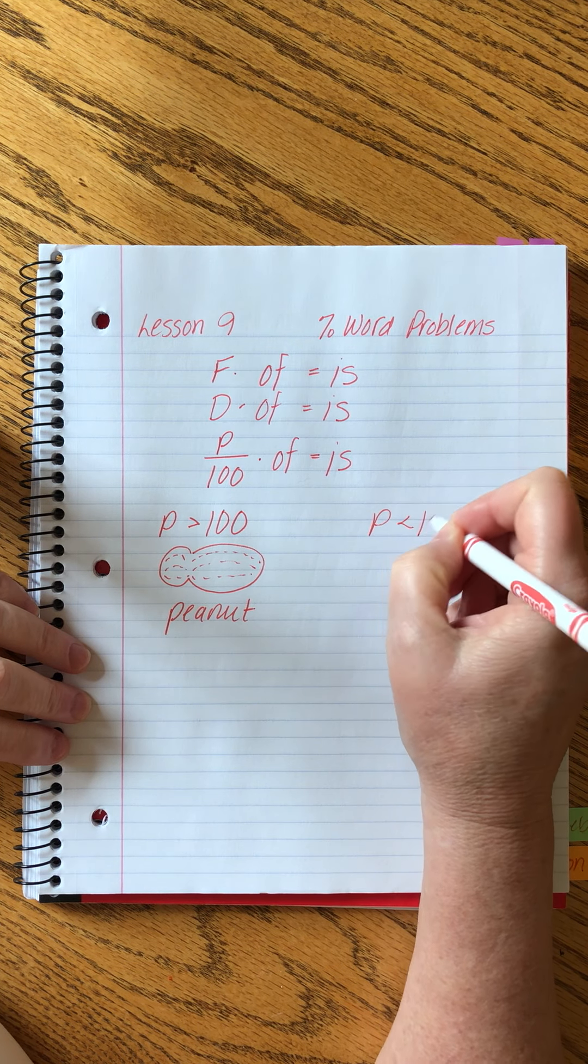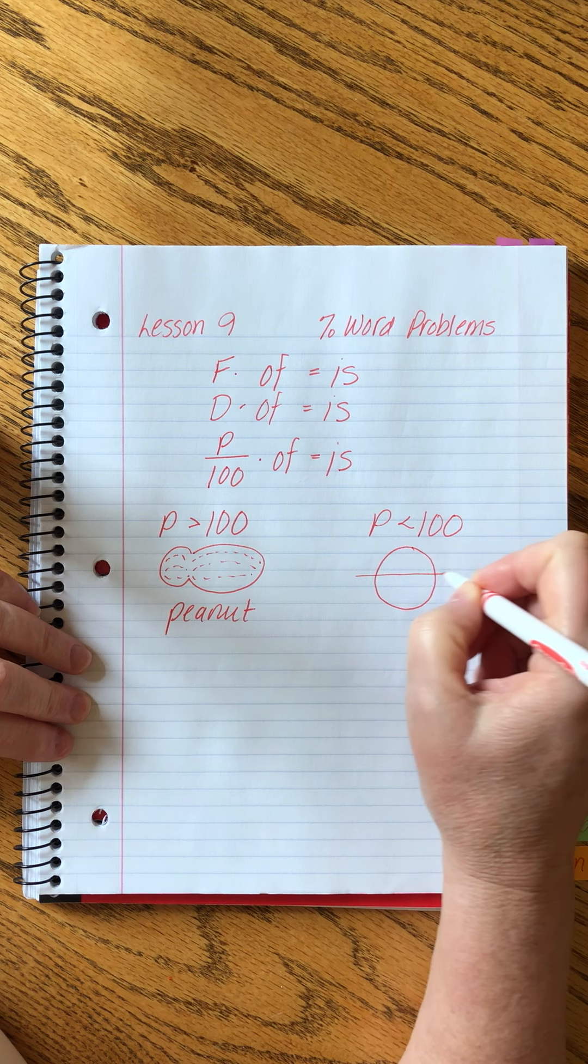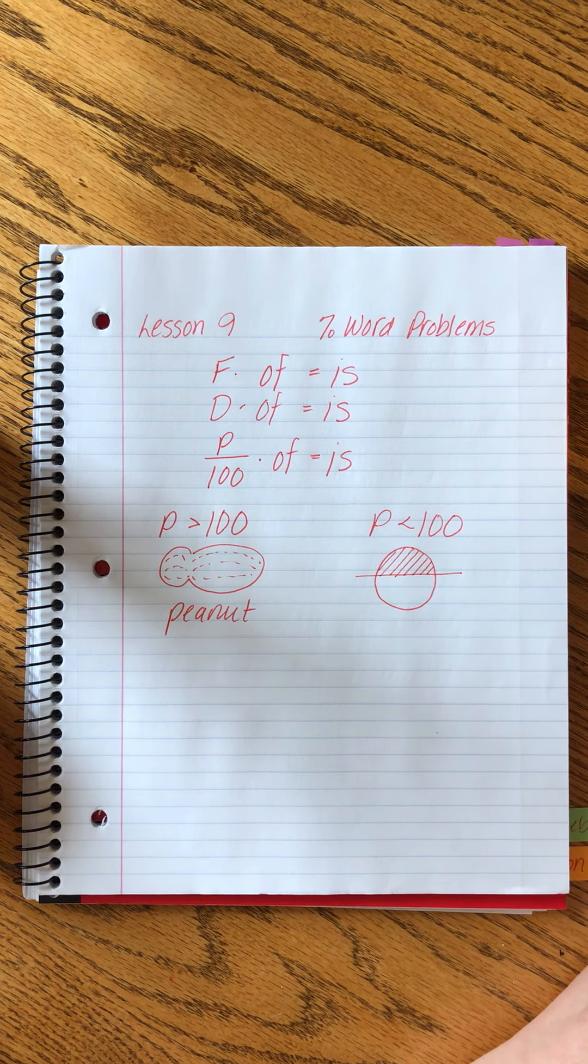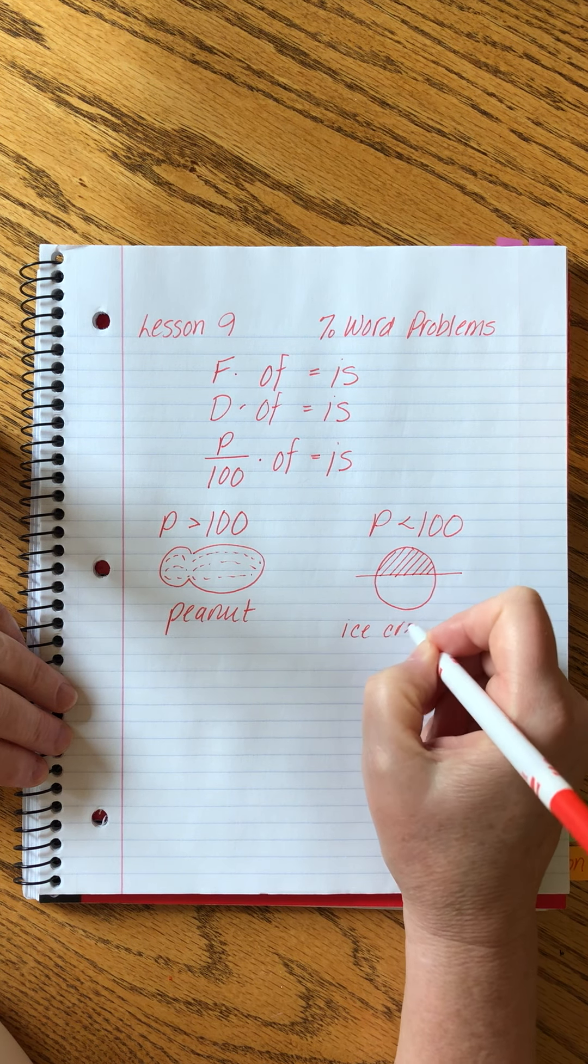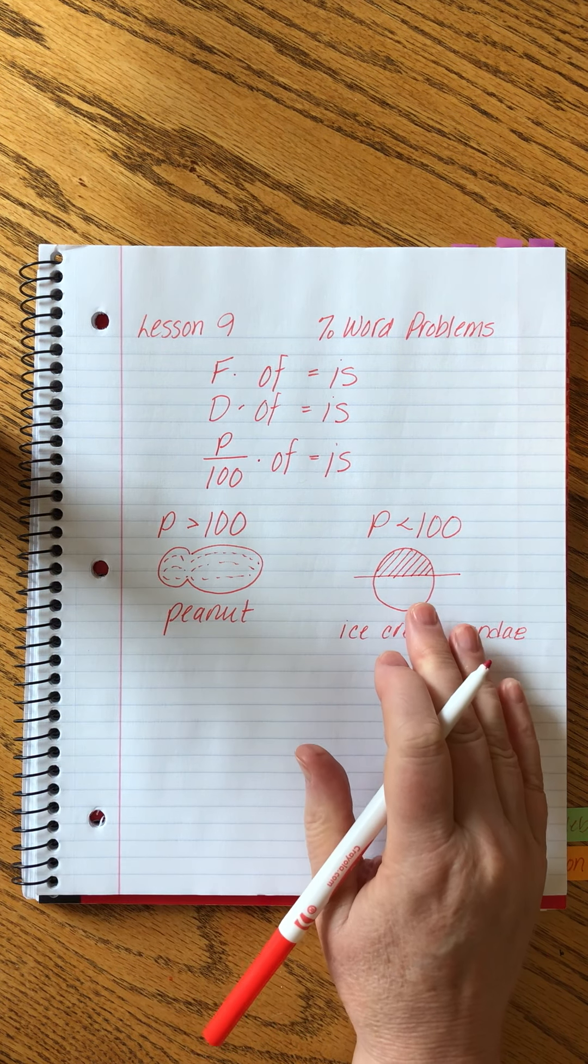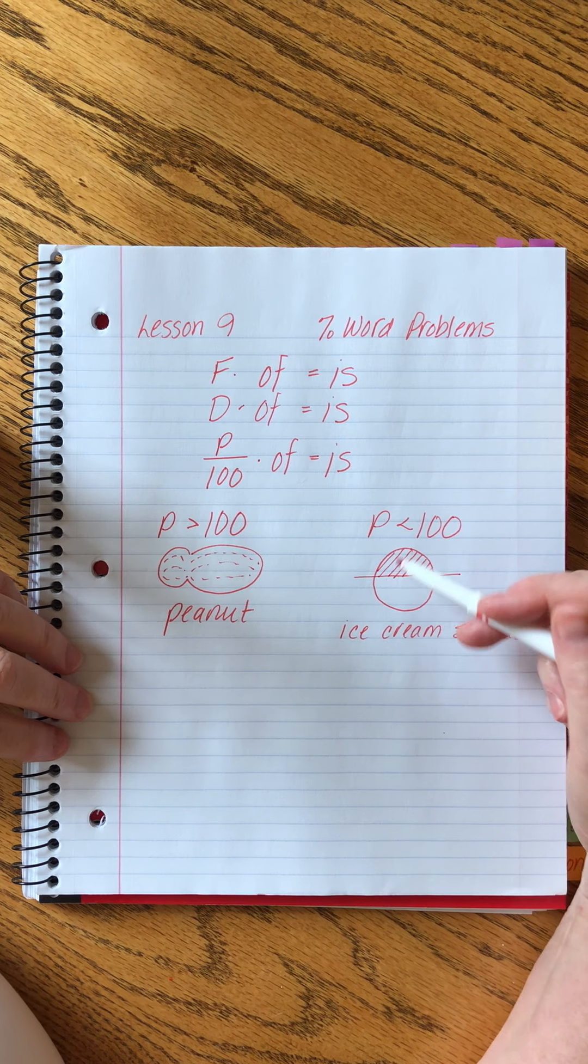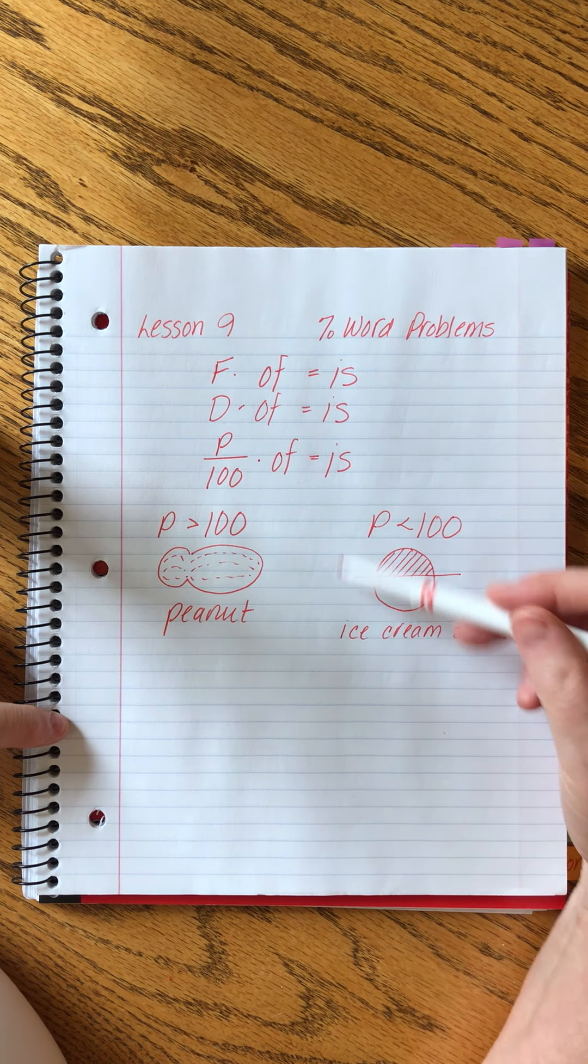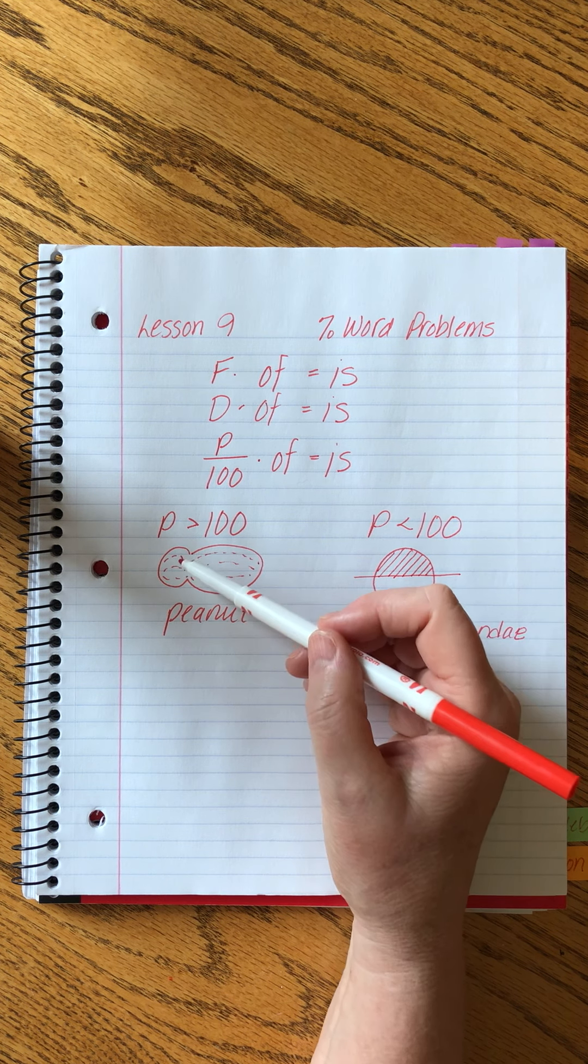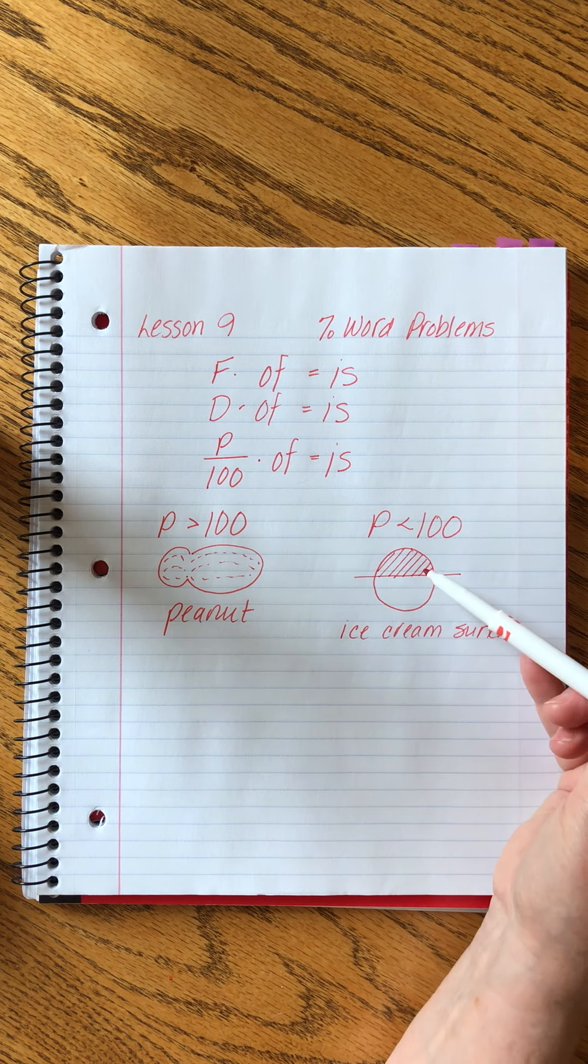We can also have percents that are less than 100 and those I call ice cream sundae problems because there's our whole group and we divide it. In my mind, this looks like hot fudge on the top of a scoop of vanilla ice cream. I know you kind of have to work on that, but I call these ice cream sundaes type problems to distinguish them. Fractions and decimals only fit this category. But when we have percents, we can also go greater than 100% and that creates this expanded bubble situation that yields the peanuts. So today, we're going to do one of these and then we're going to do one of these.